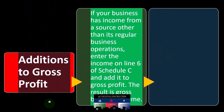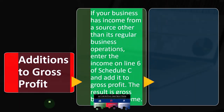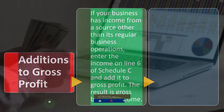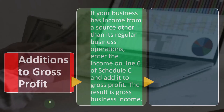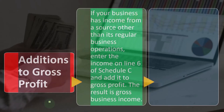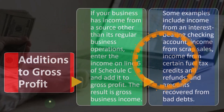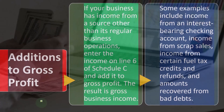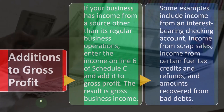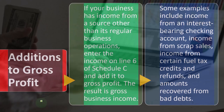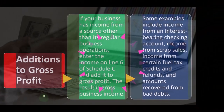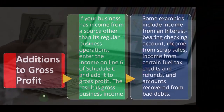Additions to gross profit: if your business has income from a source other than its regular business operations, enter the income on line six of Schedule C and add it to gross profit — the result is gross business income. Some examples include income from an interest-bearing checking account, income from scrap sales, income from certain fuel tax credits and refunds, and amounts recovered from bad debt.